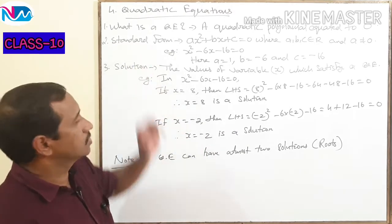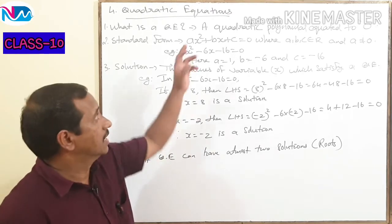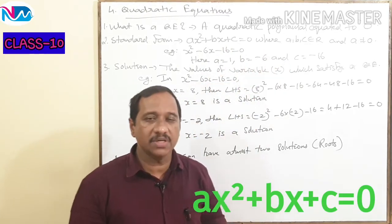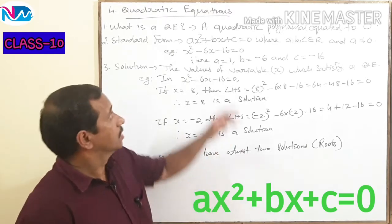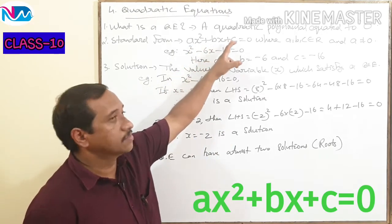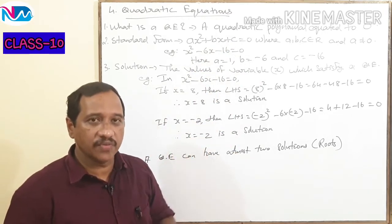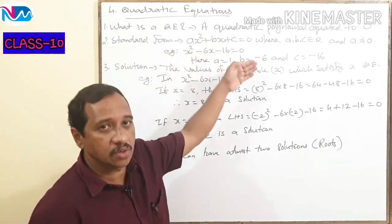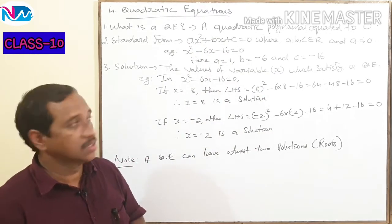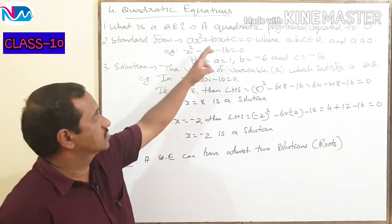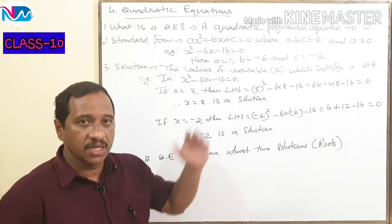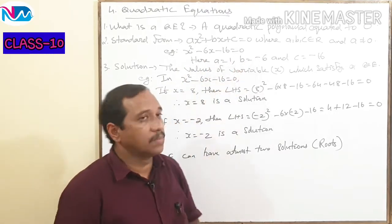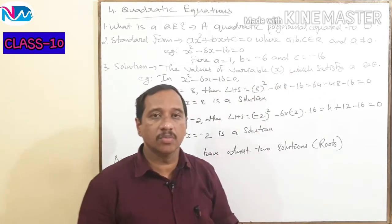The standard form of a quadratic equation is ax² + bx + c = 0, where a, b, c are real numbers and a is not equal to zero. Here, ax² + bx + c is the standard form of a quadratic polynomial, and ax² + bx + c = 0 is a quadratic equation. For example, x² - 6x - 16 = 0. Comparing with the standard form: a = 1, b = -6, and c = -16.